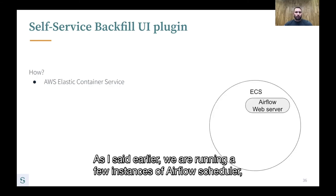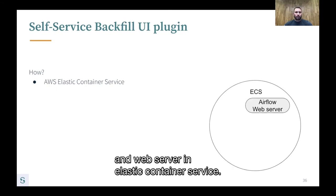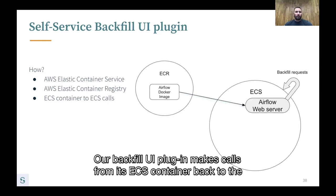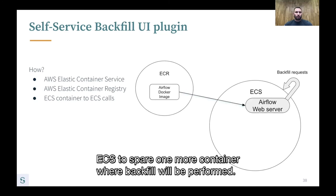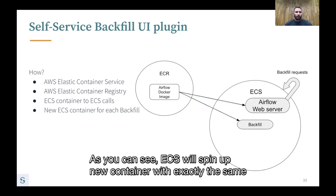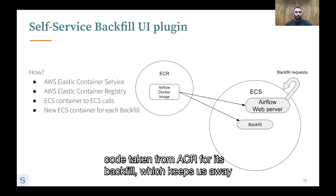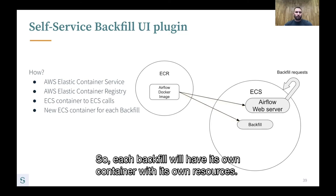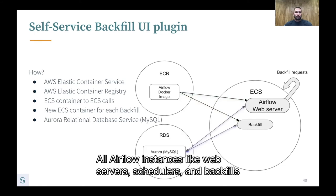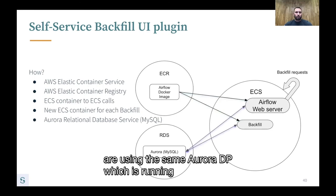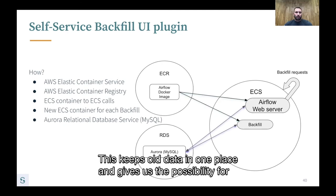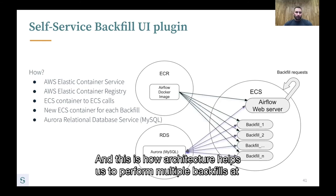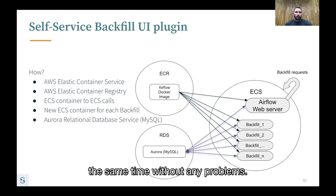So we came up with a third approach, which is scalable and doesn't require any resources from the scheduler or the web server. We run a few instances of Airflow scheduler and web server in Elastic Container Service, with all Airflow and plugin code kept inside a Docker image in Elastic Container Registry. Our backfill UI plugin makes calls from its ECS container back to ECS to spin up one more container where the backfill is performed. ECS spins up a new container with exactly the same code from ECR for each backfill, keeping us away from managing resources on a shared container. All Airflow instances — web server, schedulers, and backfills — use the same Aurora DB on RDS, keeping all data in one place and allowing us to track backfill execution on the Airflow UI runs page.